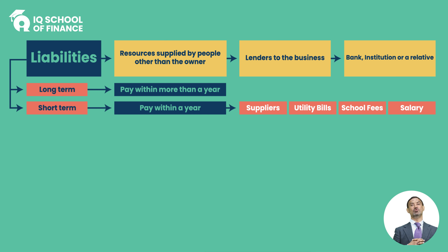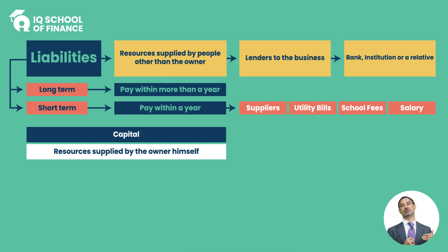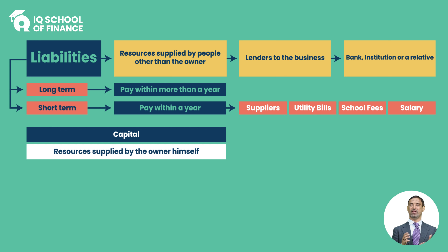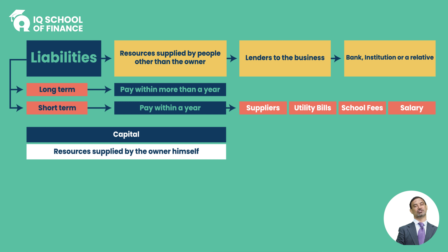यह हमारा दूसरा head of account, that is liabilities, complete हुआ। तीसरे head of account की बात करते हैं, that is capital। Resources supplied by the owner is called capital। एक और definition: residual claim by the owner is called capital। Capital की कोई specific type नहीं है - simply वो तमाम resources जो owner supply करता है, said to be capital। जो owner business में अपने personal resources लेकर आता है, that is called capital।